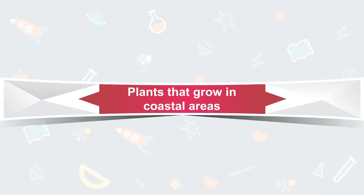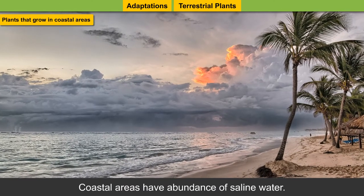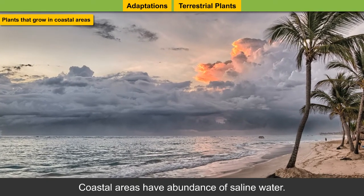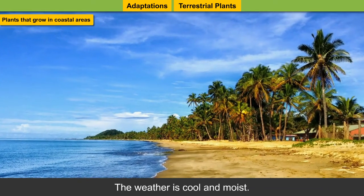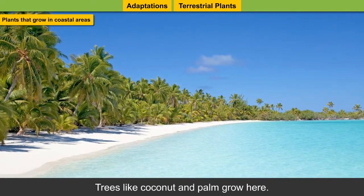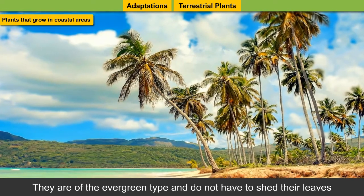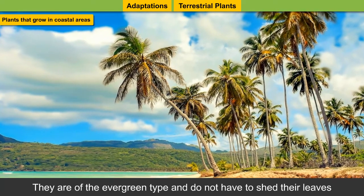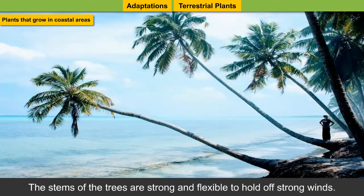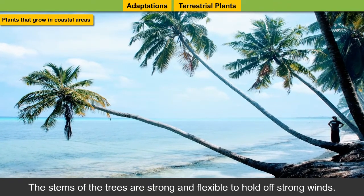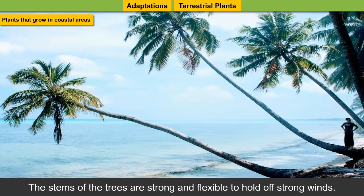Plants that grow in coastal areas: Coastal areas have an abundance of saline water and the weather is cool and moist. Trees like coconut and palm grow there. They are of the evergreen type and do not shed their leaves throughout the year. The stems of the trees are strong and flexible to hold off strong winds.